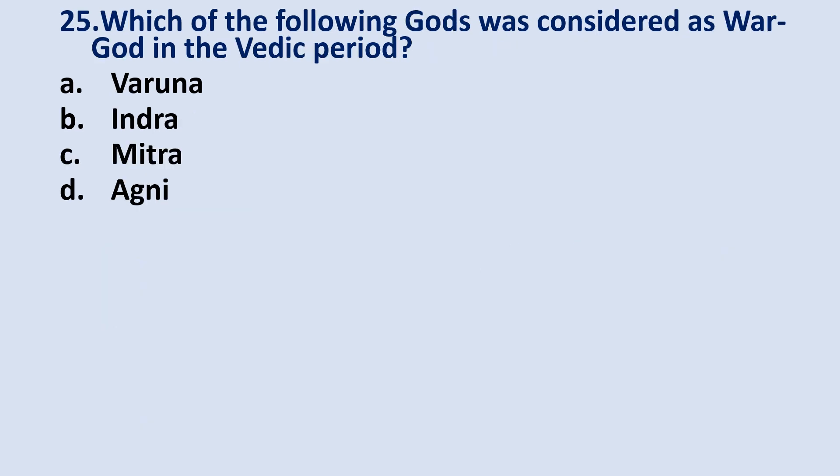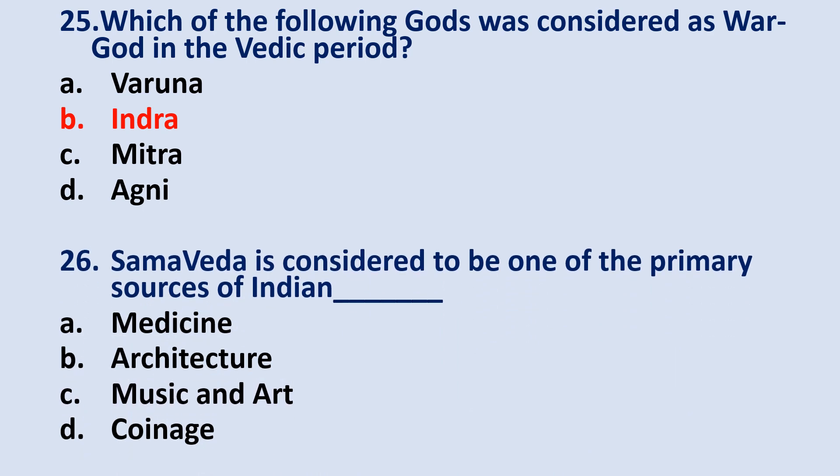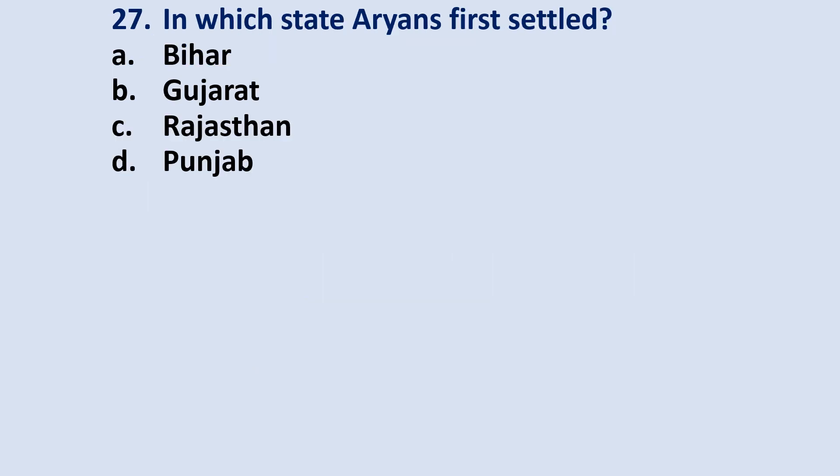Question number 25: which of the following gods was considered as the war god in the Vedic period? The correct answer will be option B — Indra. Question number 26: Samaveda is considered to be one of the primary sources of Indian music and art. The answer is option C — Music and art. Question number 27: in which stage did the Aryans first settle? The answer is option D — Punjab.